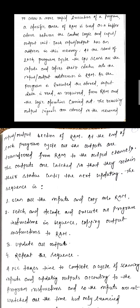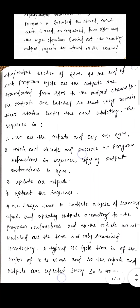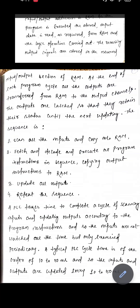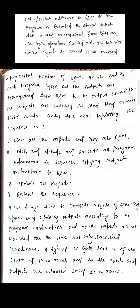A PLC takes time to complete a cycle of scanning inputs and updating outputs according to the program instructions. The inputs are not watched all the time but only examined periodically. A typical PLC cycle time is of the order of 10 to 50 milliseconds, so the inputs and outputs are updated every 10 to 50 milliseconds.